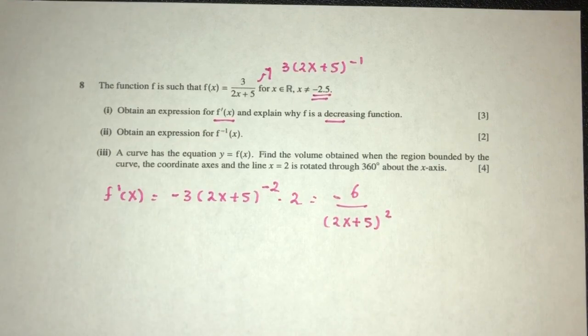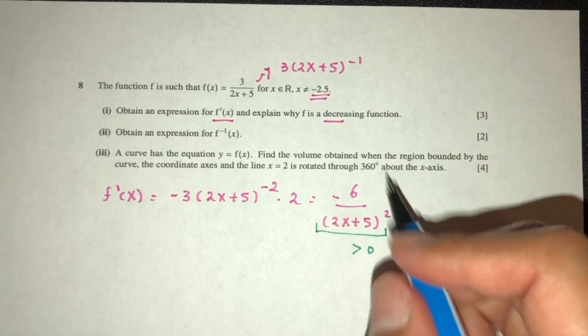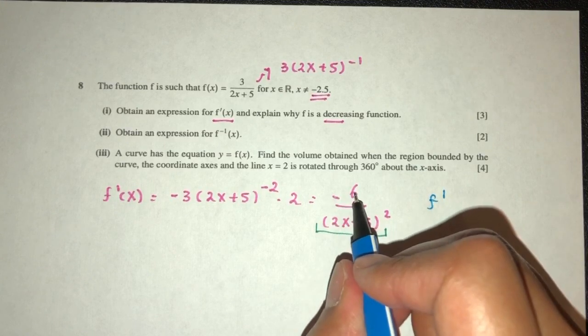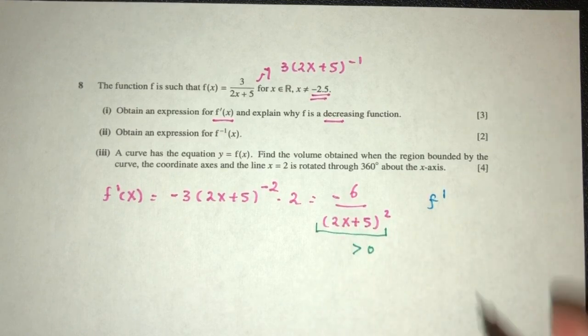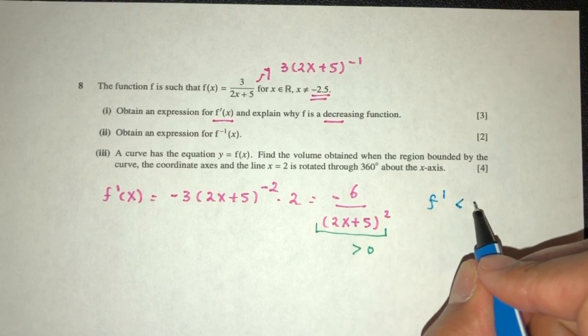Now because we understand that the base here always be more than 0, and the value here is always going to be, because minus 6 divided by positive value, it will always be negative, right? If that makes sense.